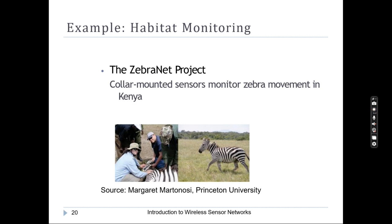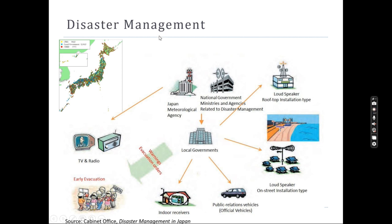A simple example is habitat monitoring of zebras: a collar-mounted sensor node monitors zebra movement, their lifestyle, and where they go, so useful management activities can be taken. For disaster management, Japan is prone to earthquakes very frequently, so they have enabled plenty of sensor nodes all around in many places. These sensor nodes detect land sliding, tsunami, or earthquake events so that early evacuation can easily be done.